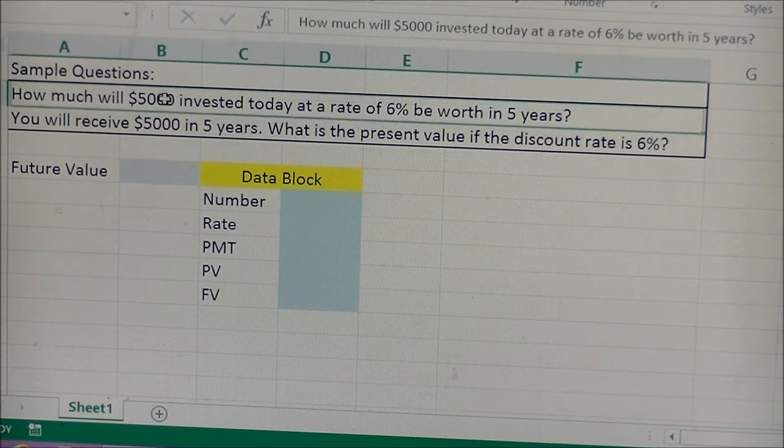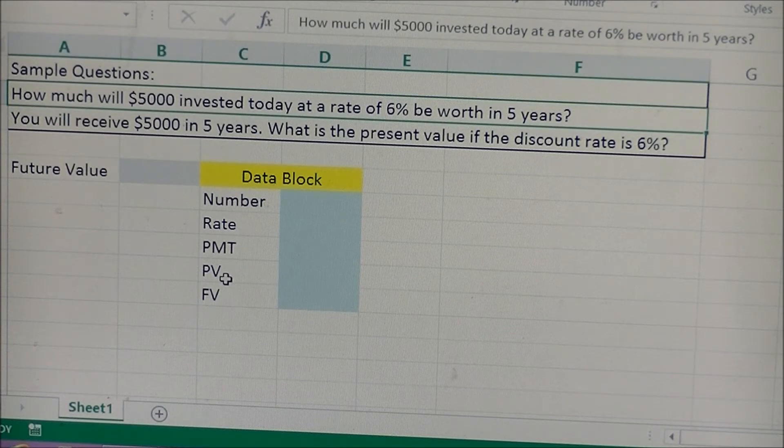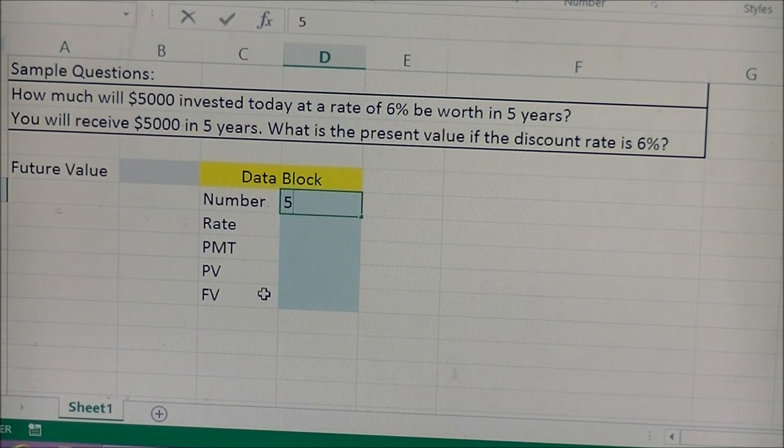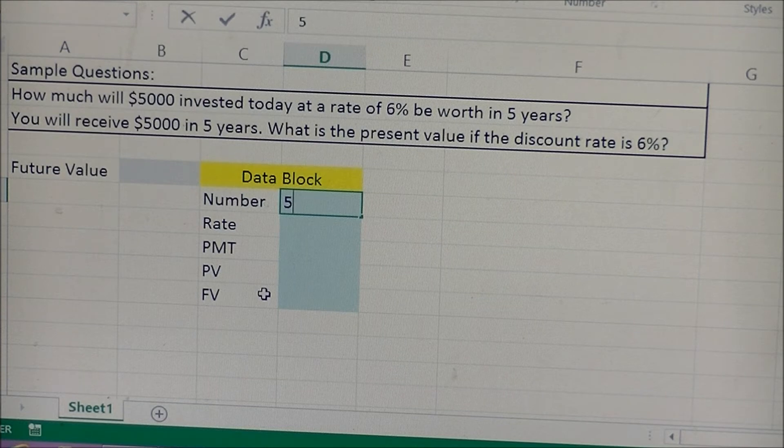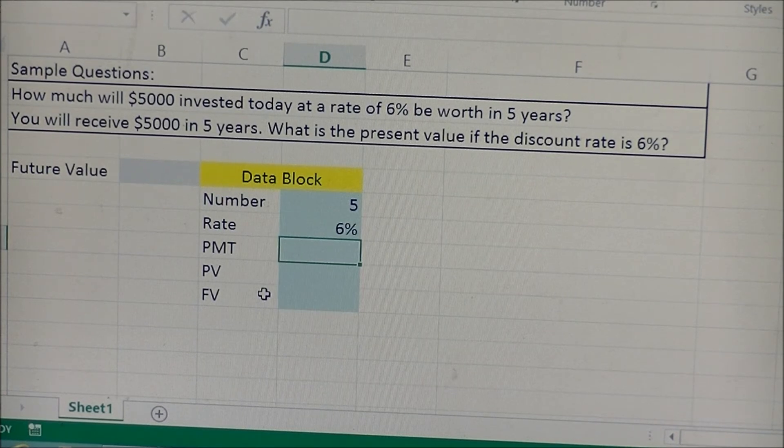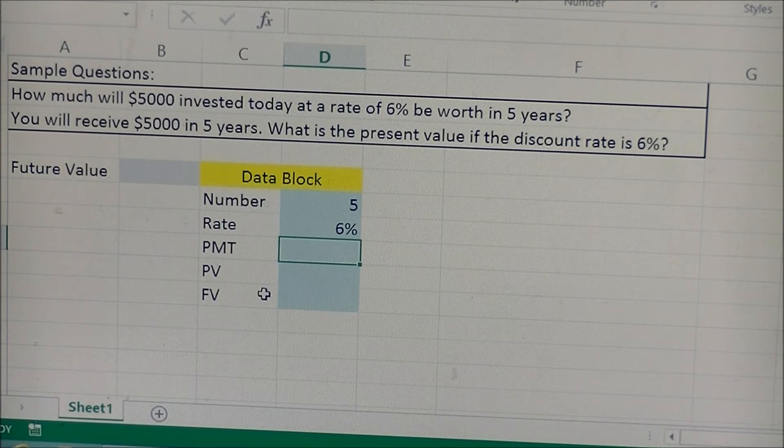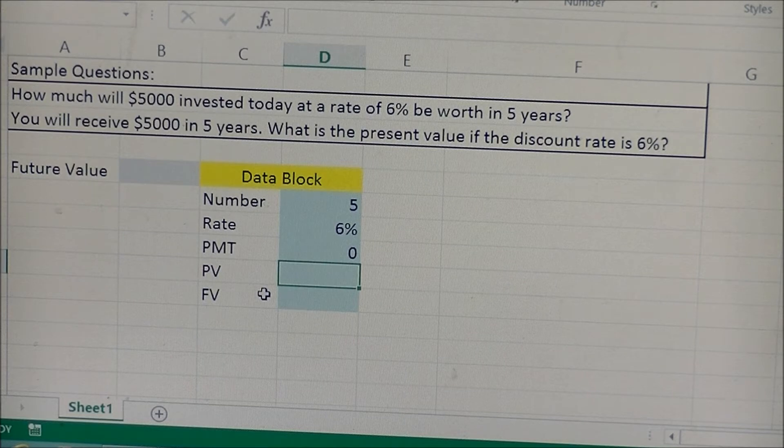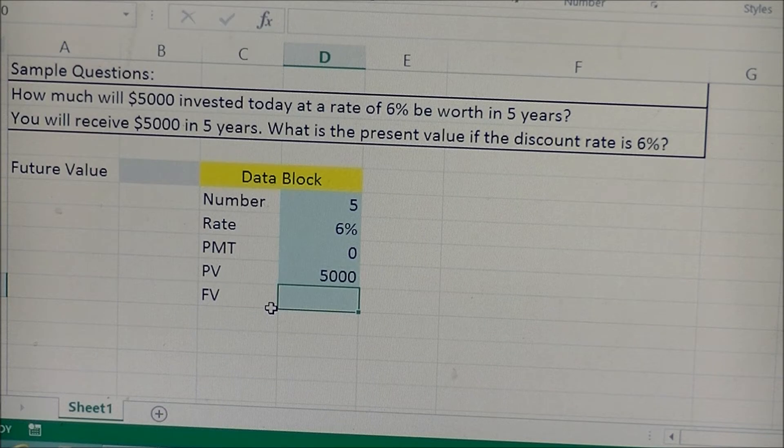So for the first problem, how much will $5,000 invested today at a rate of 6% be worth in five years? The number is going to be five. The interest rate is going to be six. You definitely want to make sure you put the percent sign behind it. Payment, there's no payment being made. You already have the money in the bank, so payment's going to be zero, and the present value is the $5,000.